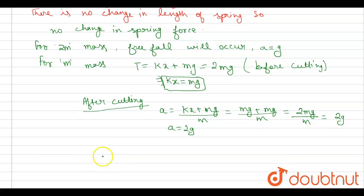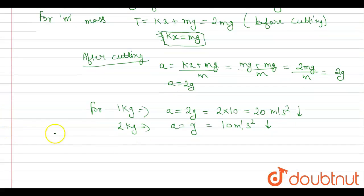So for 1 kg mass, acceleration is equal to 2g and the value of g is given 10 m per second squared, so a equals 2 times 10 equals 20 m/s². For 2 kg mass, acceleration is equal to g which is equal to 10 m per second squared. Both accelerations are acting downward. So option D is correct.